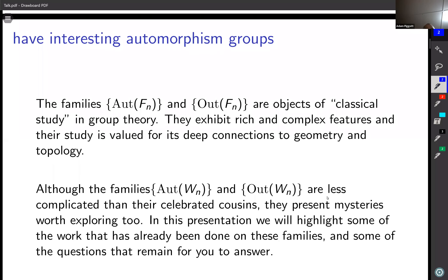The automorphism group of the free group of rank N and the outer automorphism group are objects of classical study in group theory — people have been thinking about them for at least a century. They exhibit rich and complex features and their study is valued for its deep connections to geometry and topology. Results about automorphisms of free groups are very important, and constructions like outer space for free groups are well known. You can make a name for yourself studying those things.